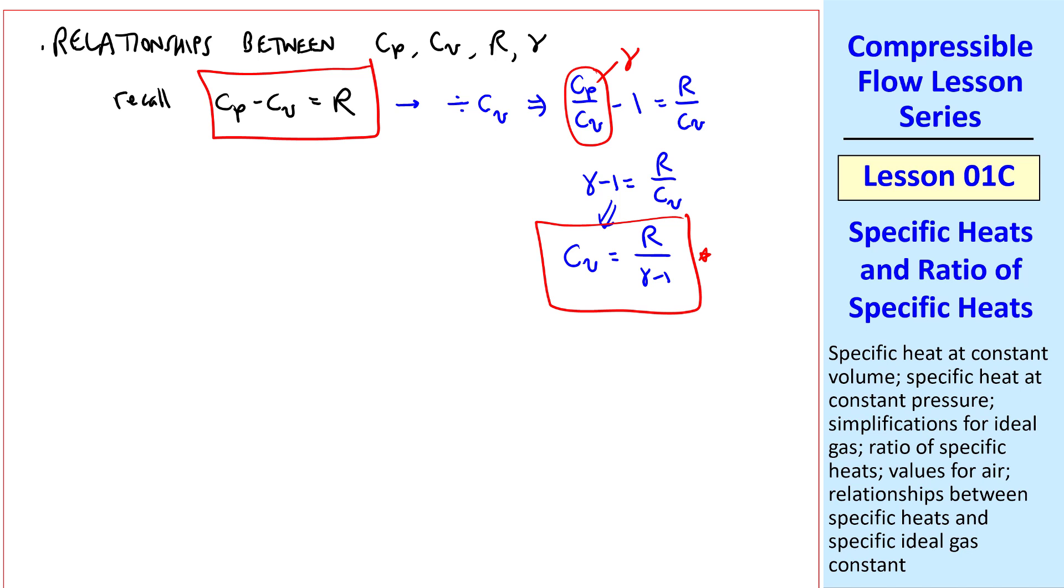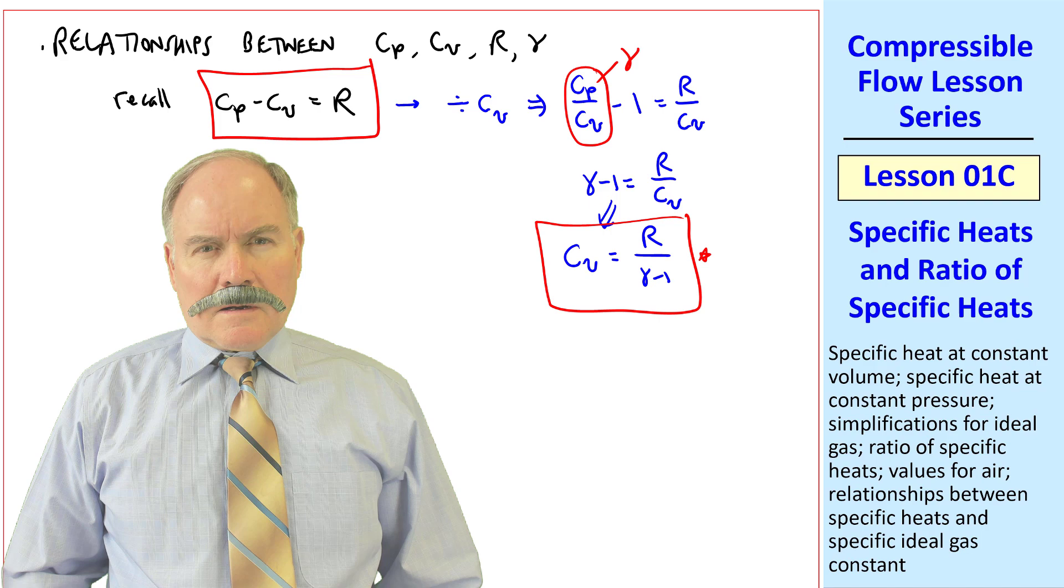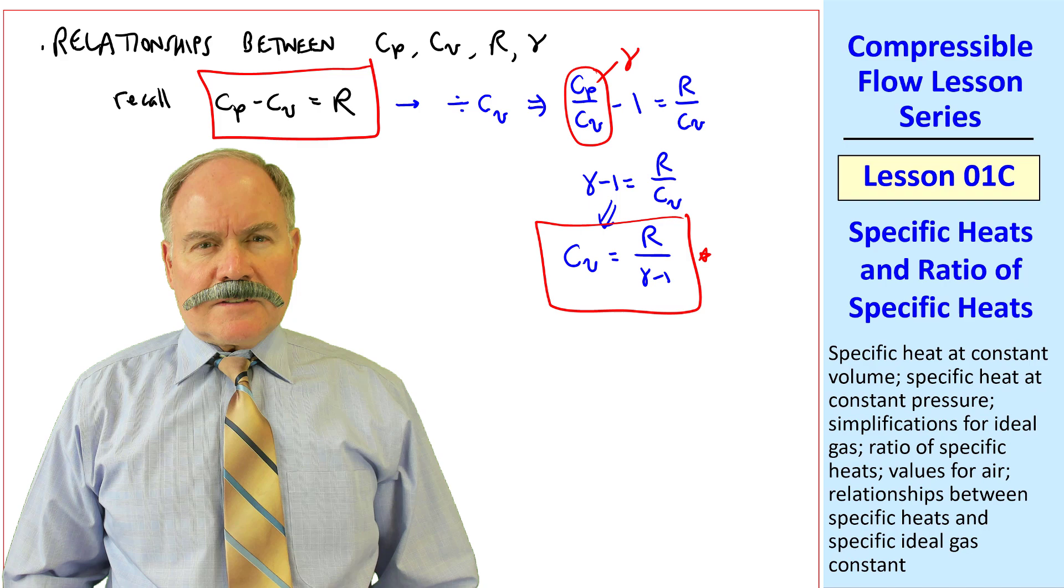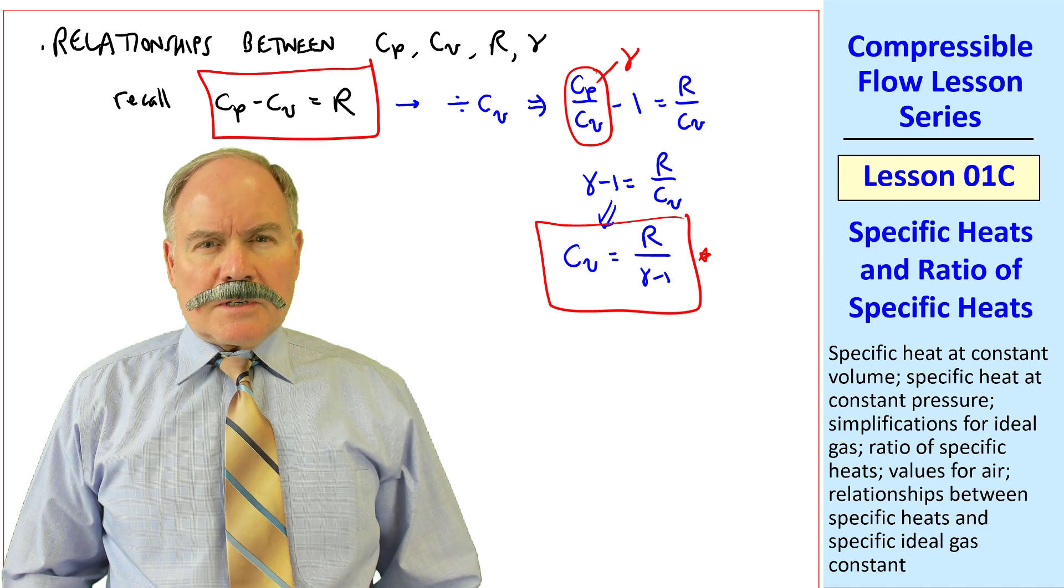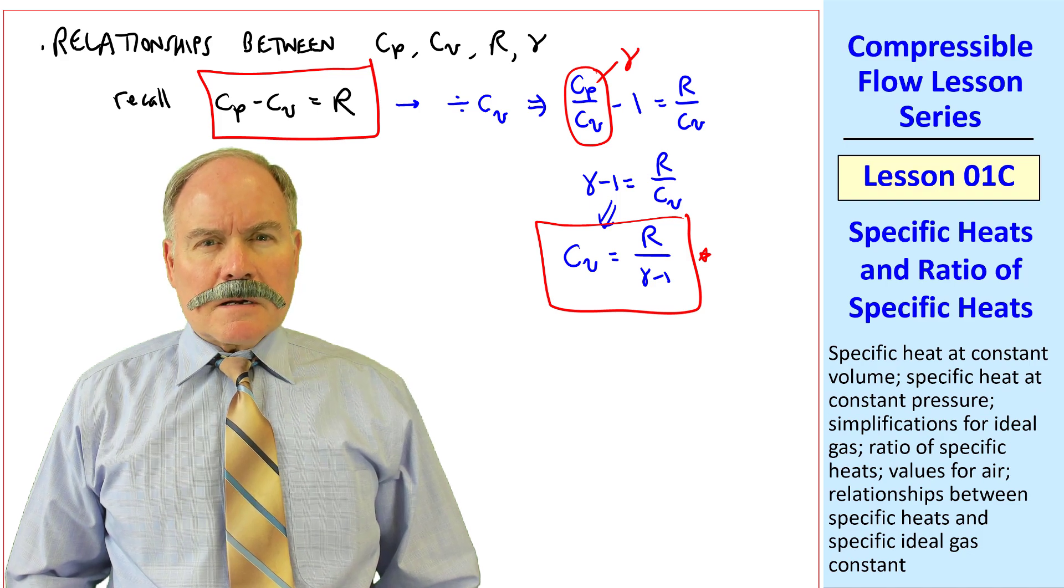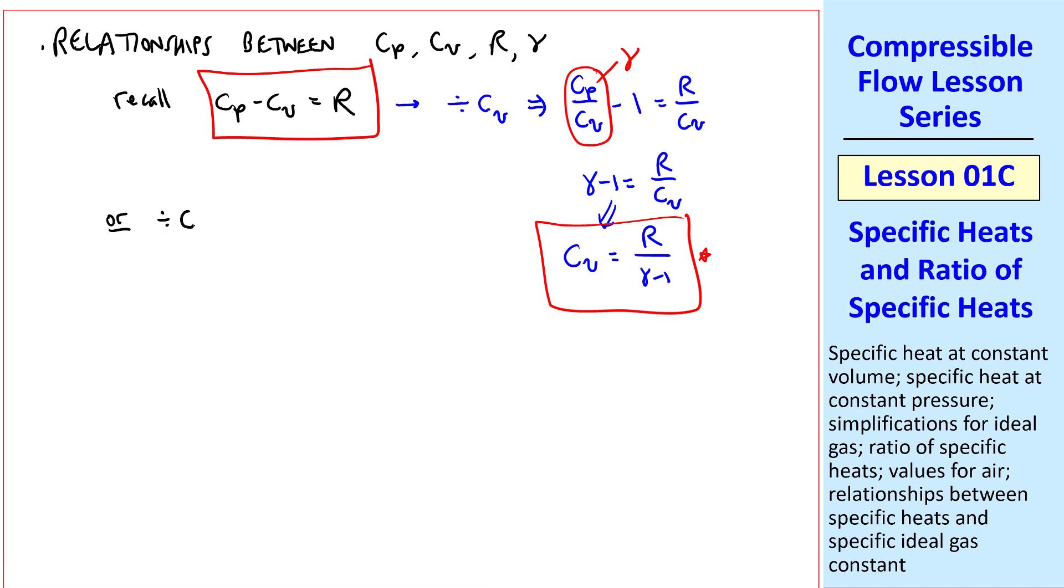Let me ask the students a question. How can we do a similar thing for Cp instead of Cv? Well, I suppose that if we divide by Cp instead of Cv in that equation, you would be able to eliminate Cv when you substitute in for gamma. That's right. If we divide by Cp instead, this equation becomes 1 minus Cv over Cp equal R over Cp. Recognizing this as 1 over gamma and doing a little bit of algebra, we can show that Cp is R gamma over gamma minus 1.